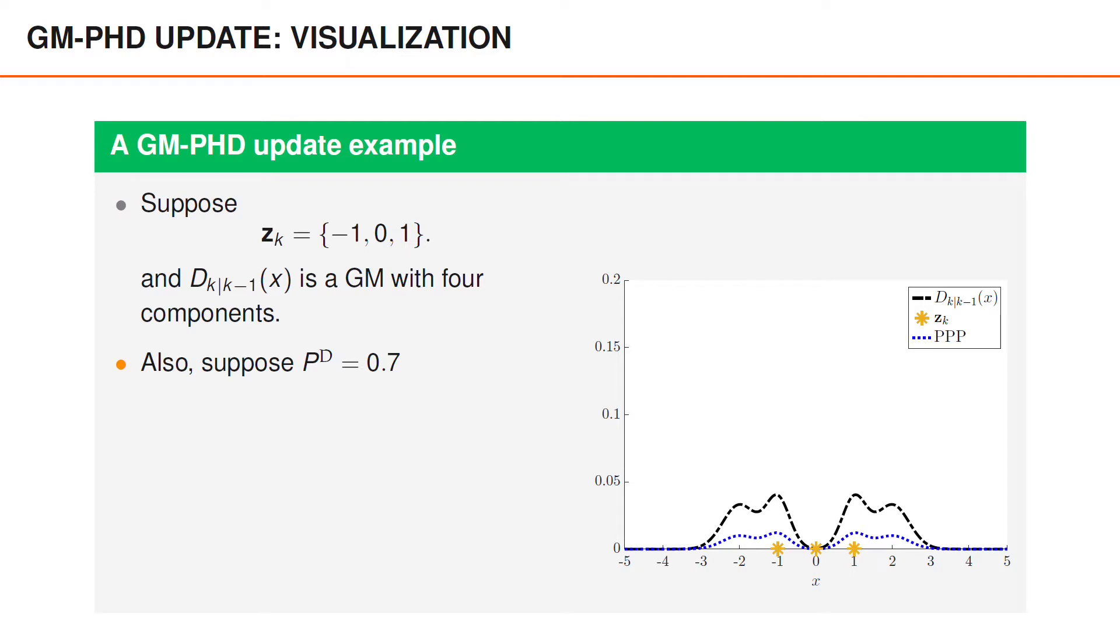Suppose the probability of detection is 0.7. This means that the Poisson point process representing the set of objects that are undetected at time k is 1 minus pd or 0.3 times the predicted phd. Also,